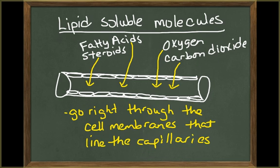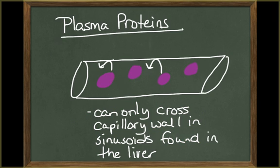Lipids, like fatty acids and steroids, as well as lipid-soluble materials such as oxygen and carbon dioxide, cross the capillary walls by diffusing through the endothelial plasma membranes. Plasma proteins are normally unable to cross the endothelial lining anywhere except in places like the liver, where there are sinusoids.